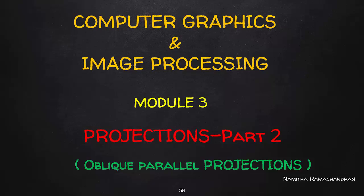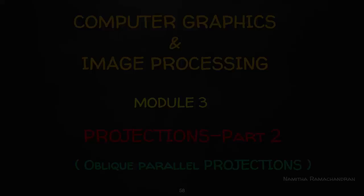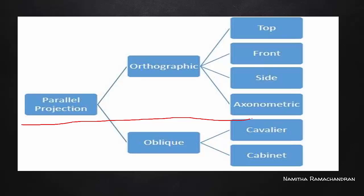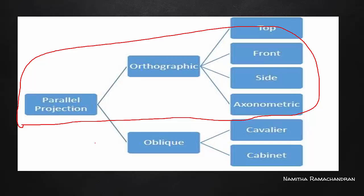Welcome back everyone. In this video, we will be talking about the next two projections. In the previous video, we covered Parallel and Perspective Projection, where Parallel Projection includes Orthographic Projection. The next case is Oblique Projection, which has two classifications: Cavalier and Cabinet. We will be talking about their properties in this video.